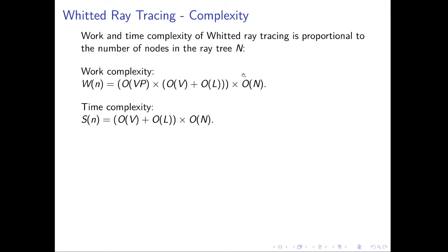The work complexity of Whitted ray tracing is proportional to the work complexity of primary ray casting times the number of nodes in the largest ray tree across all pixels. We have a ray tree for each pixel; some will be trivial (ray misses, no root node), others quite complex with multiple bounces. The work depends on visiting every node in the ray tree, so whether the tree grows deeper or wider, it always means more work.